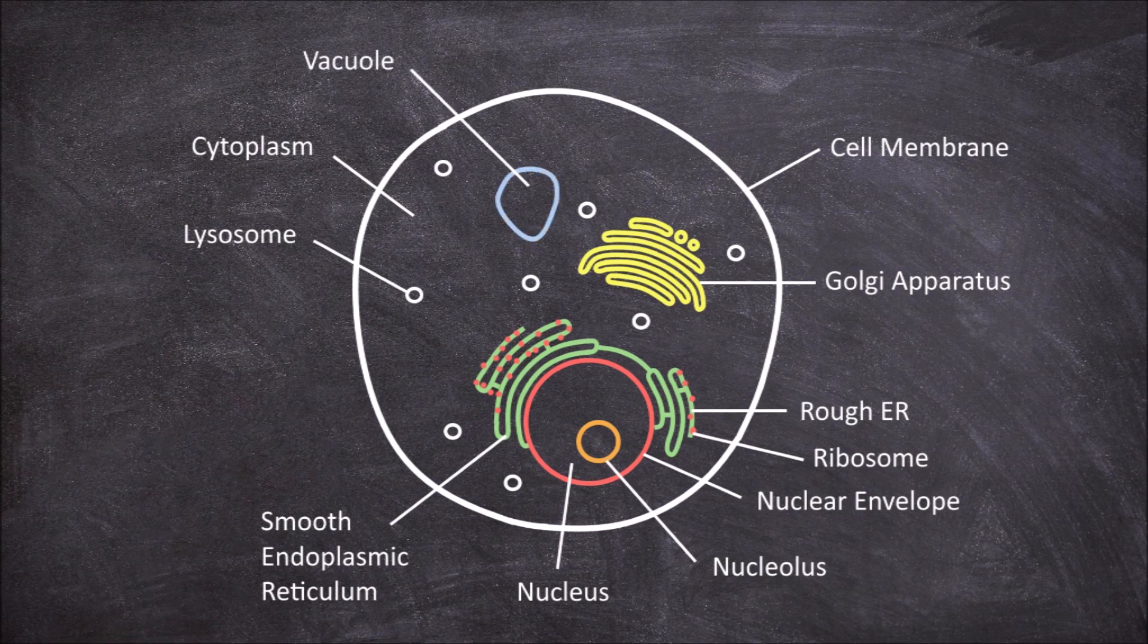Animal cells also have a vacuole. These are organelles filled with a mixture of water and molecules. The vacuole's main function is in providing storage for the cell. They can store food and nutrients. They can also store waste products that need to be removed from the cell.